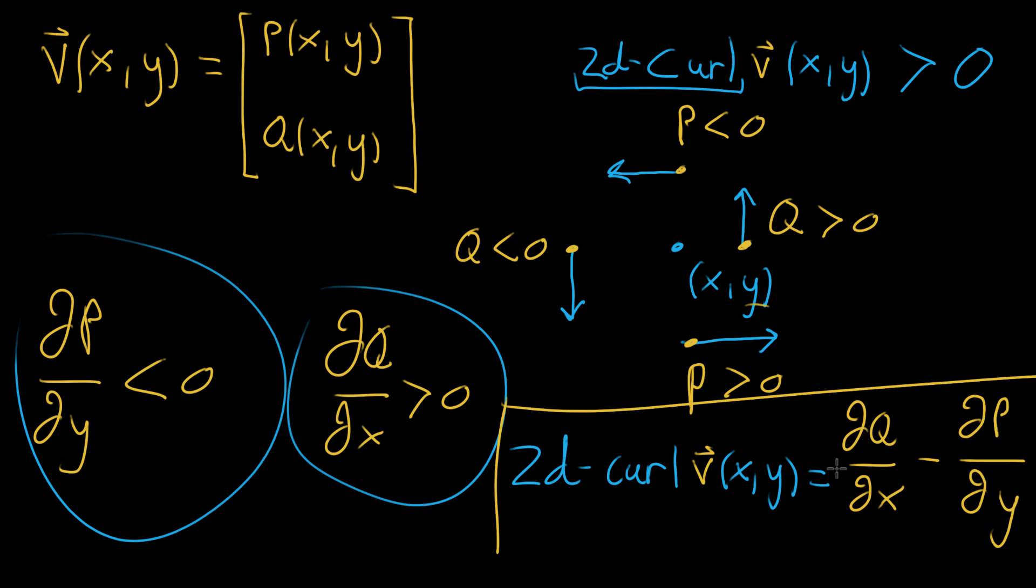And this right here is the formula for two-dimensional curl. Which basically, you can think of it as a measure, at any given point, you're asking how much does the surrounding information to that point look like this setup, like this perfect counter-clockwise rotation setup. And the more it looks like this setup, the more this value will be positive. And if it was the opposite of this, if each of the vectors was turned around and you have clockwise rotation, each of these values would become the negative of what it had been before, so two-D curl would end up being negative.